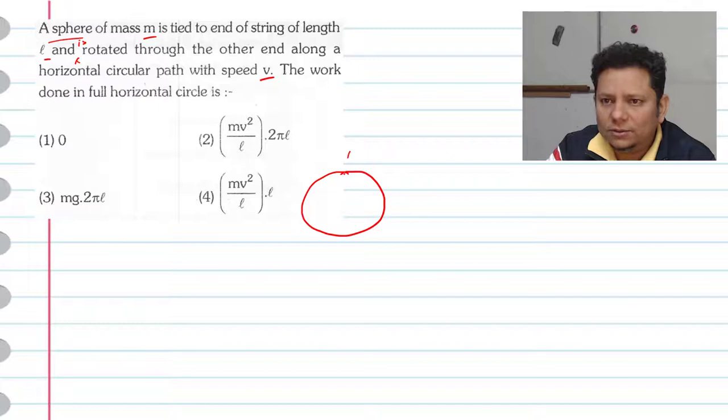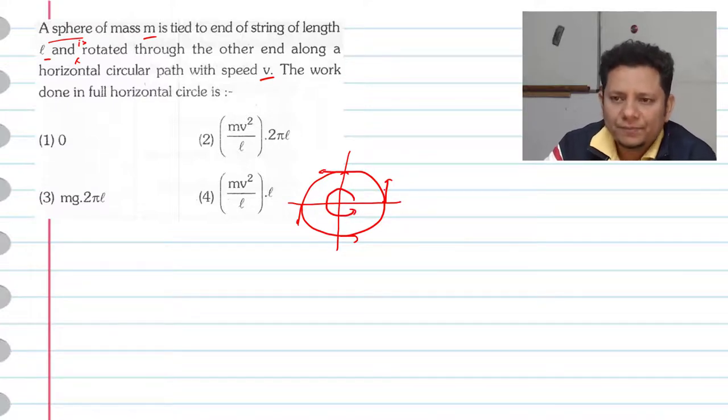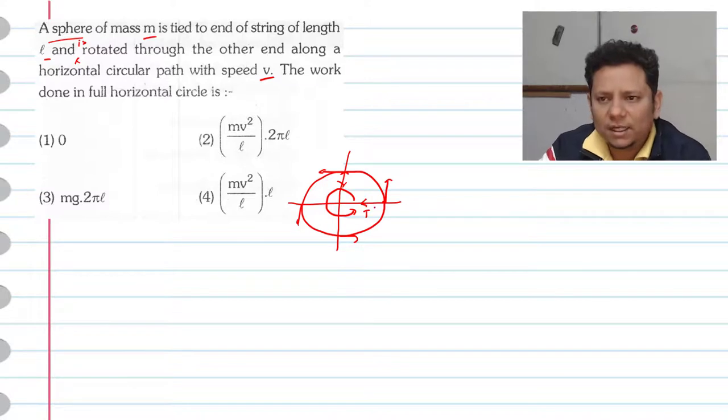If you have a horizontal circle and a particle goes around - you start here and go here and go there and go here and go back - you have circular motion. The force is the tension, and the tension provides the necessary centripetal acceleration.